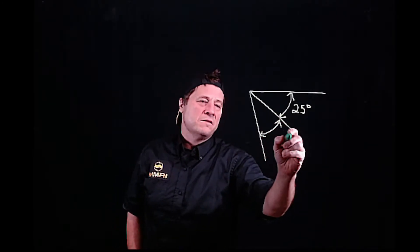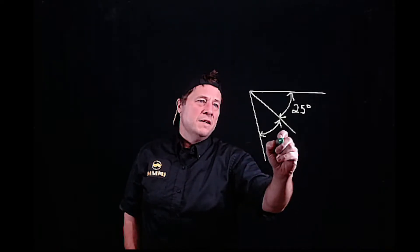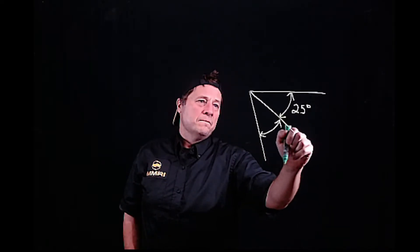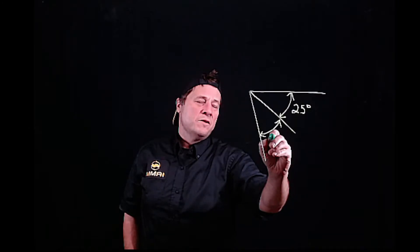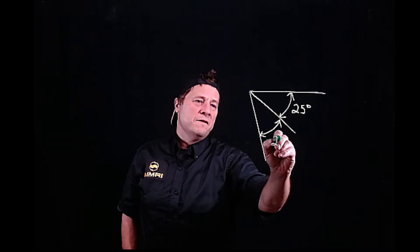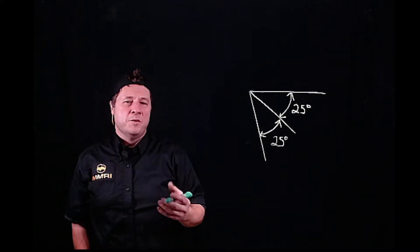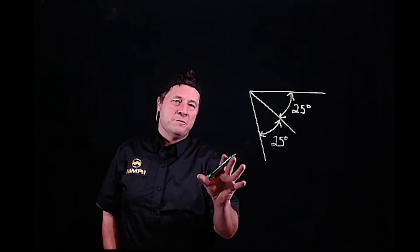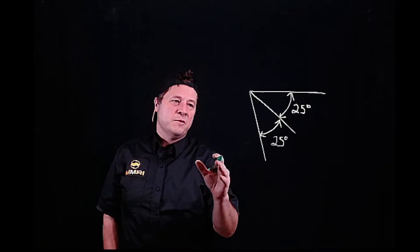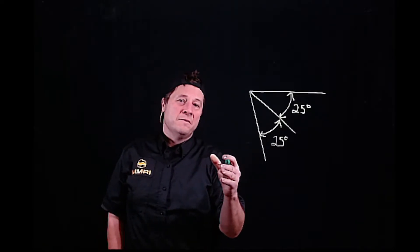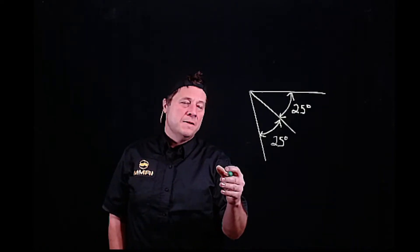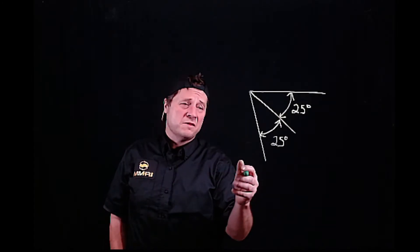We have 25 degrees and 25 degrees. This is a simple example because if it was 25 point something degree decimal degrees or if it was minutes and seconds, it gets more complicated.